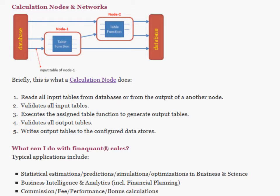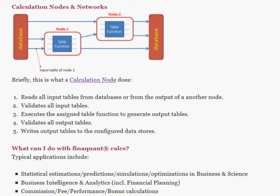You can automate your periodical calculations — the whole calculation process — by using nodes and networks for tasks like reading input tables from multiple databases, input validations, executing the configured table functions to generate output tables, and storing all these result tables to desired data stores. Each calculation node is an independent unit of the network, which resembles a worker ant in a giant colony.